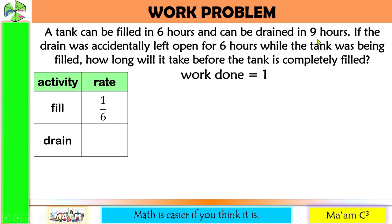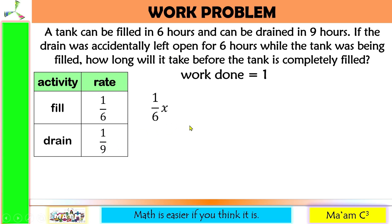The drain rate is 1 over 9, since it can be drained in 9 hours. While filling the tank, the drain was accidentally left open for 6 hours. We are asked how long it will take before the tank is completely filled. The rate for filling is 1 over 6 times x, minus the drain rate 1 over 9 times 6 hours, and this equals 1 (work done).